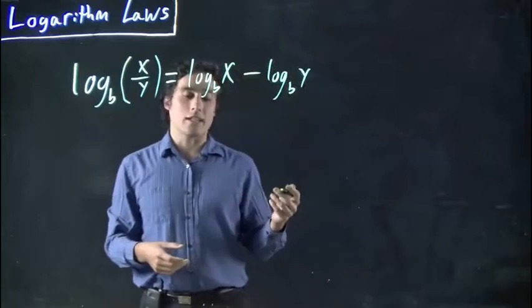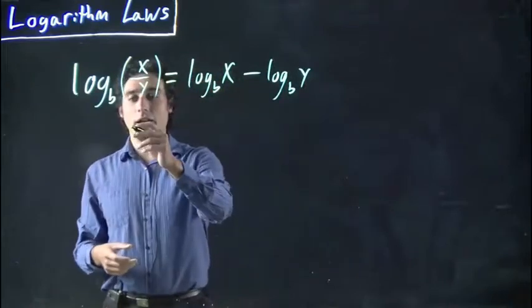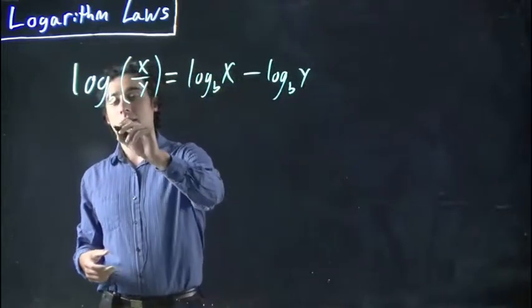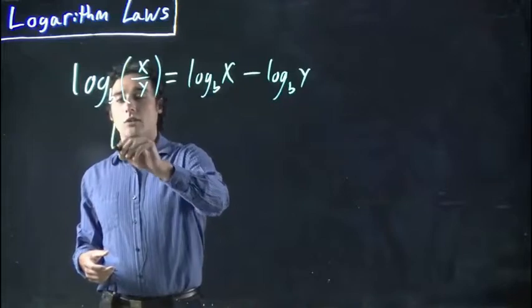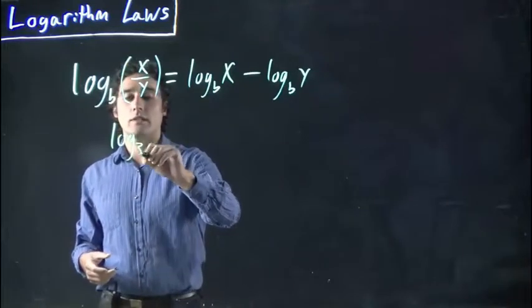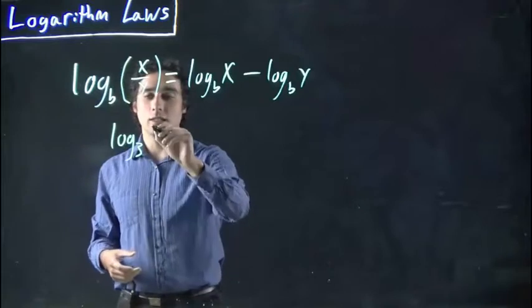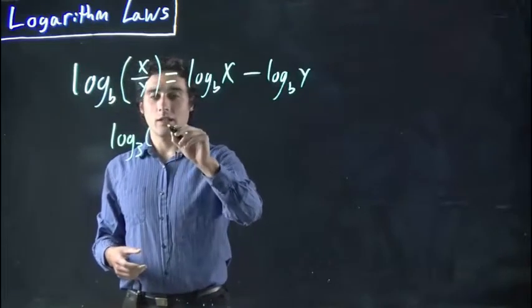So, let's take a look at an example. Let's say you had something like log to the base 3, and maybe you have 81.